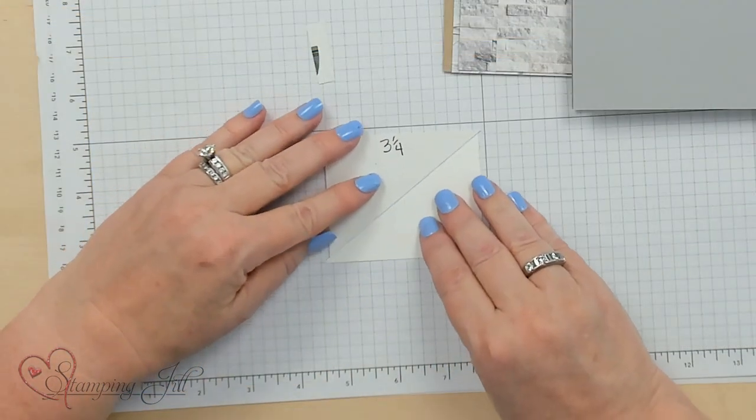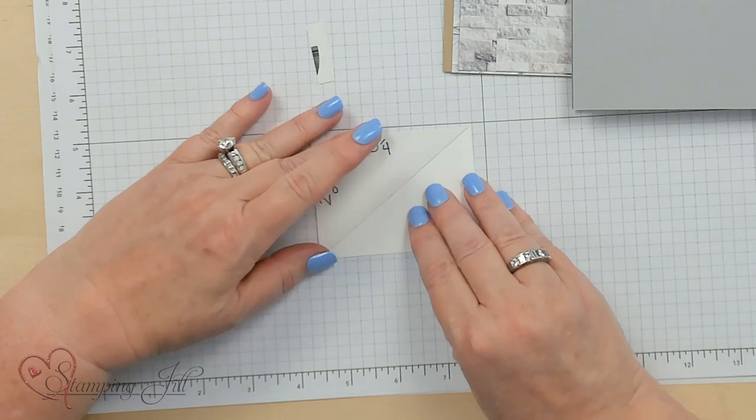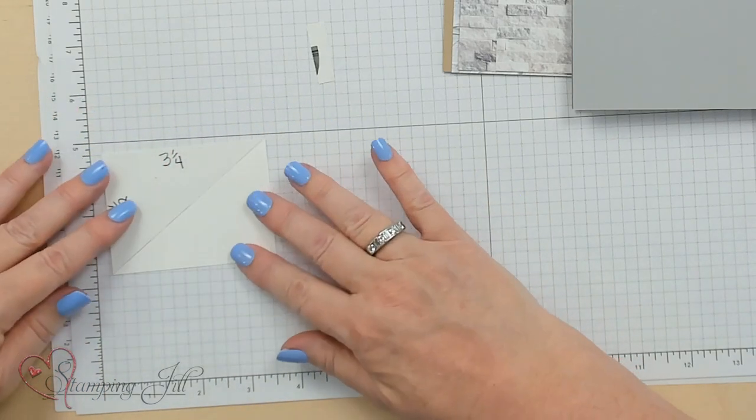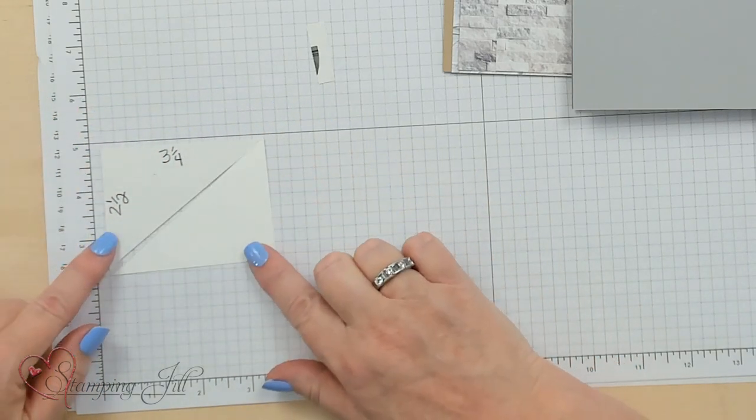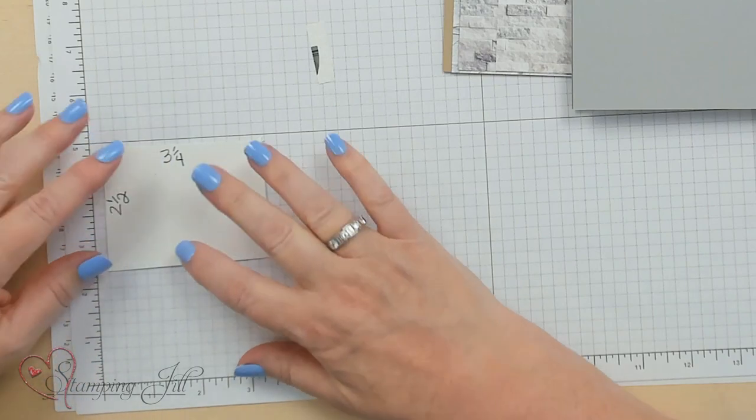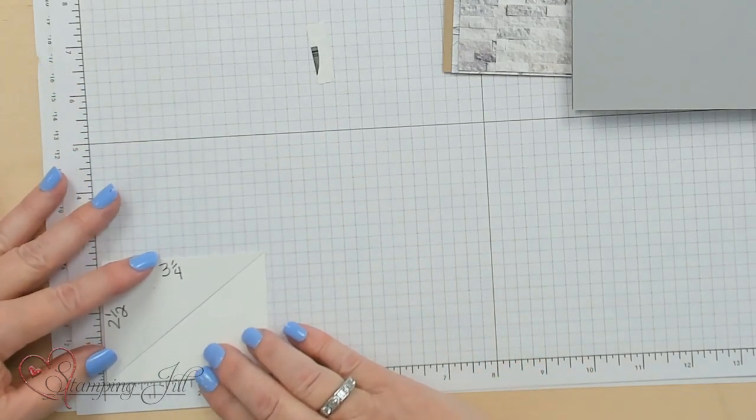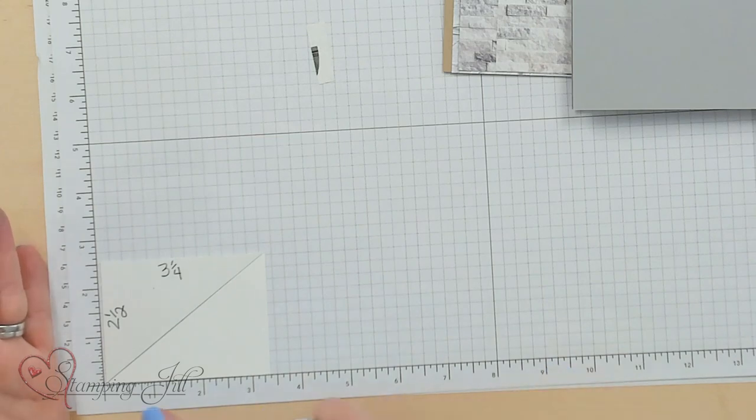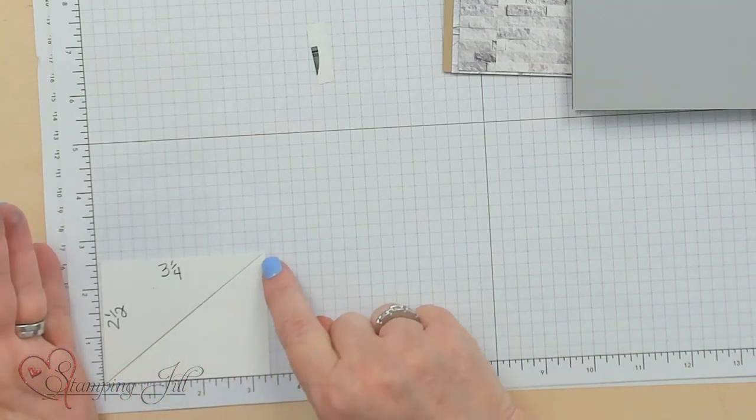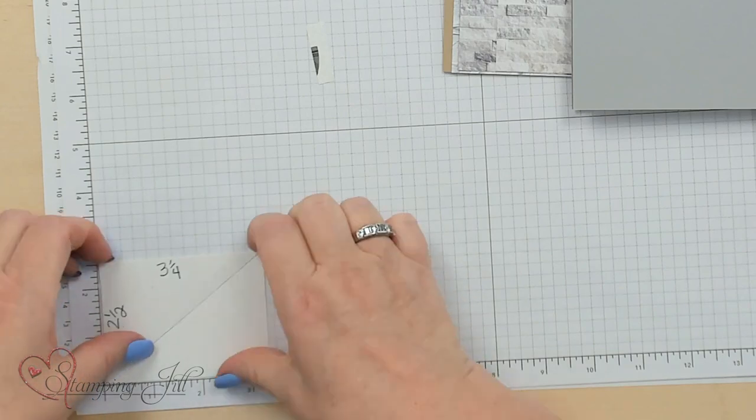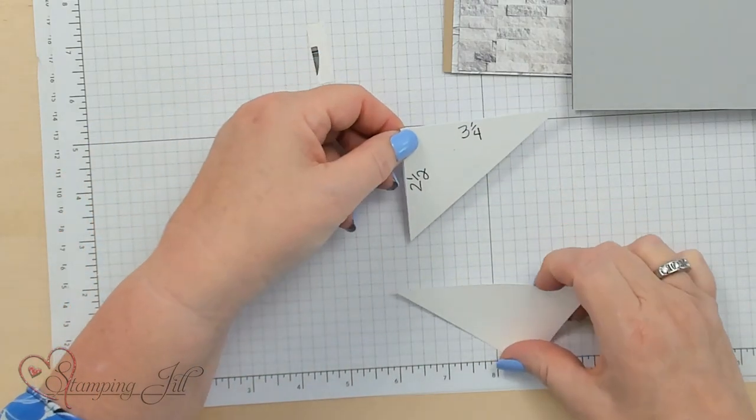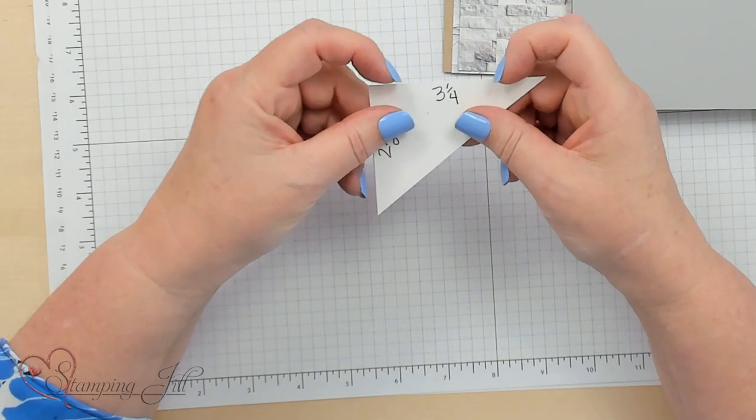First thing you're going to do is make a little template. I'm showing you a rectangle of two and a half by three and a quarter. I'm going to cut it from one corner on the diagonal to the other corner to create this triangle. I went ahead and did that with this little cardboard that comes on the back of your DSP.